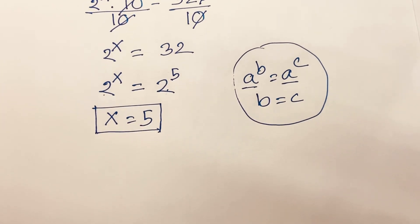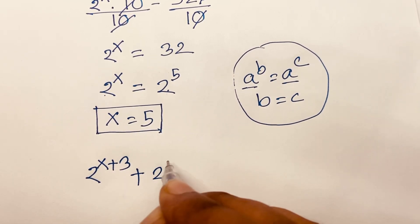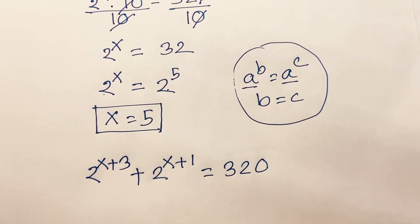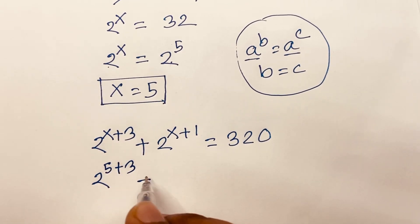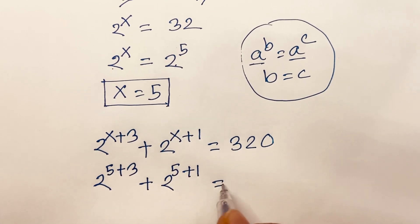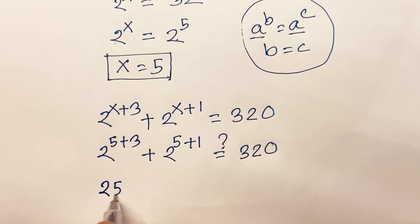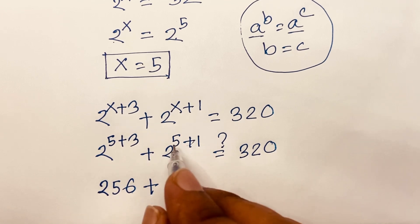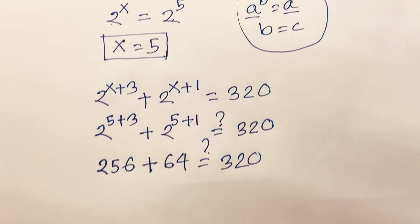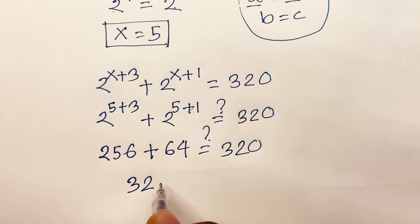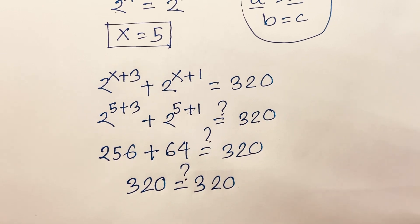Now let's verify: 2 to the power x plus 3 plus 2 to the power x plus 1 equals 320. Substituting x equals 5: 2 to the power 8 plus 2 to the power 6, which gives 256 plus 64, equals 320. So x equals 5 is confirmed as the correct answer.